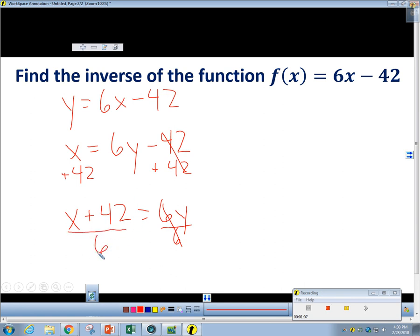This is an acceptable answer, as it is, but it's best if we take it a little further. And what you can do is distribute this 6. And what I mean by that is you can divide both of the terms on top by 6. So you'll have x over 6 plus 42 over 6. And that's still equal to y.